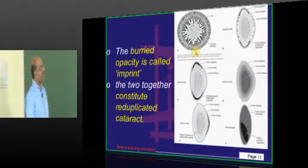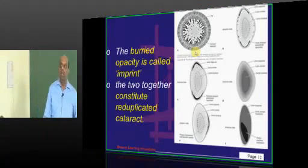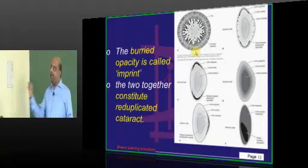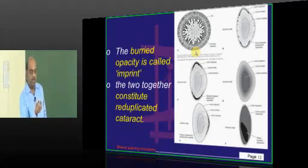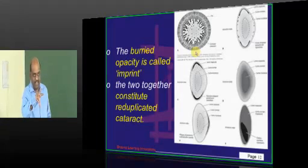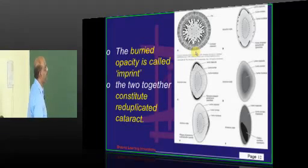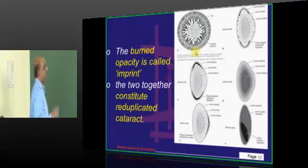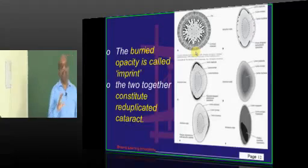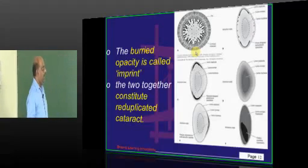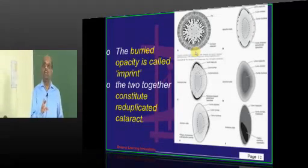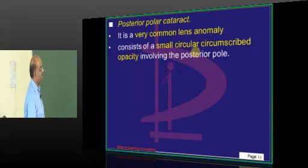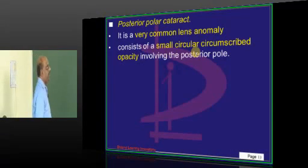This is a very common exam question. The buried opacity into the cortex in the reduplicated cataract is called the imprint, and together the two opacities constitute the reduplicated cataract.